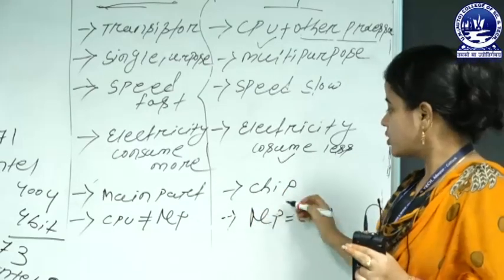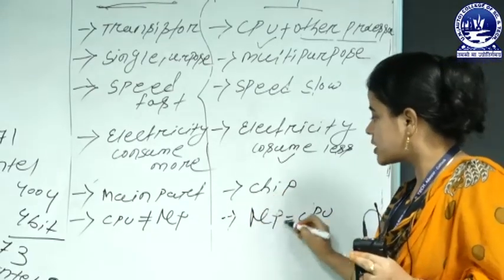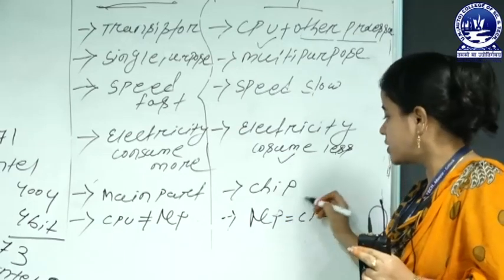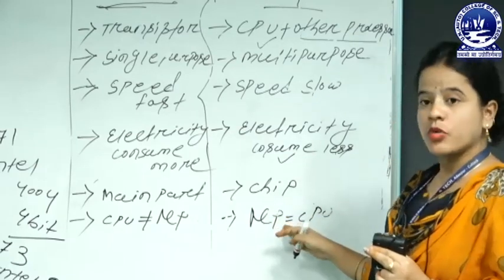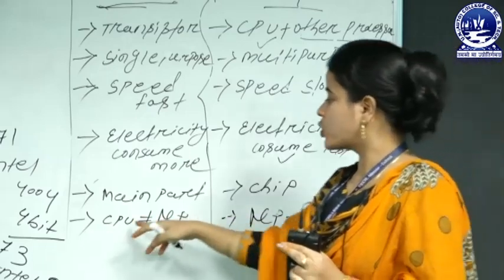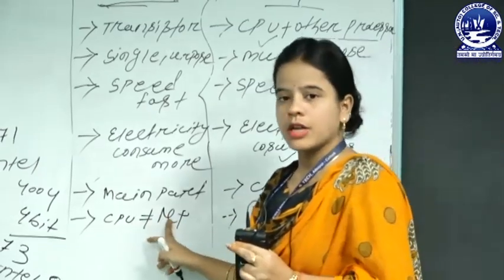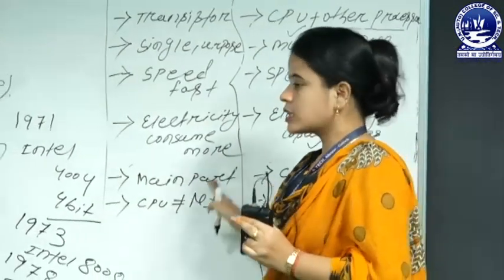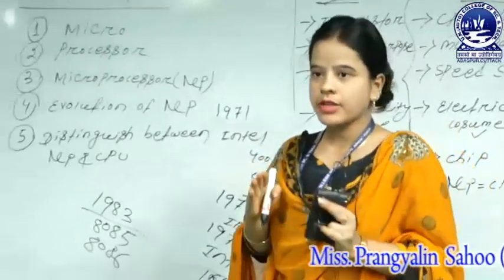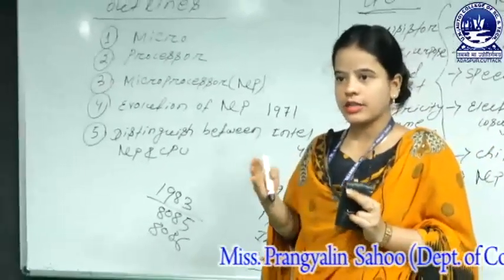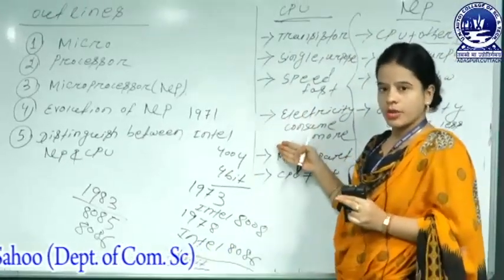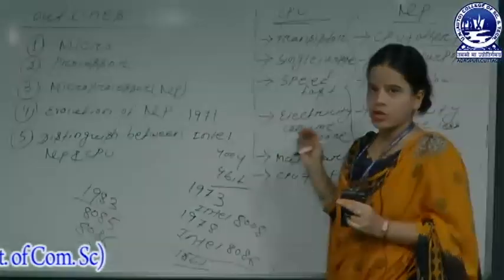Why? As we know, the microprocessor always contains one sub-component part — that is the CPU. So that is why every microprocessor can be called a processor. But every processor cannot be called a microprocessor. This is all about today's class. If you have any doubt or query, you can ask me through the comment box. Thank you.